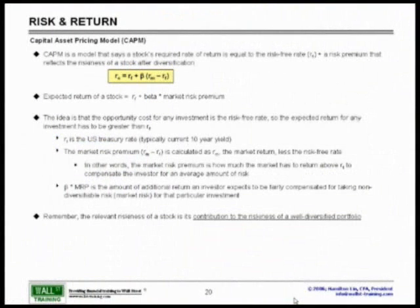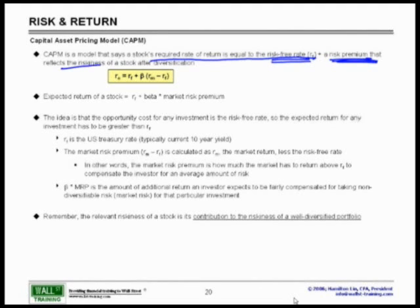Our slide says the following. CAPM is the model that says a stock's required return is equal to the risk-free rate plus a risk premium that reflects the riskiness of a stock after diversification. That's a lot of words to say in one sentence. What does that mean? Let's start with the risk-free rate portion.